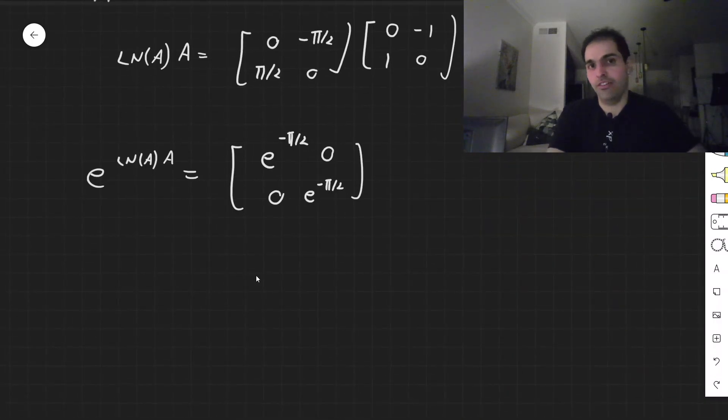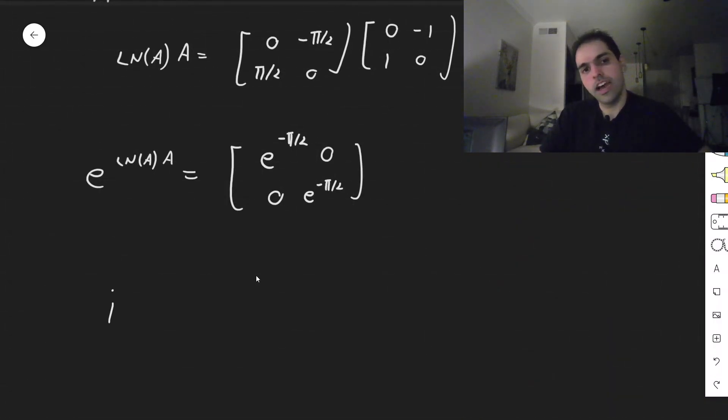So what have we found? And now this is quite interesting. i to the i, that was, again, 0 minus 1, 1, 0 to the 0 minus 1, 1, 0, and that is E to the minus pi over 2, 0, 0, E to the minus pi over 2.